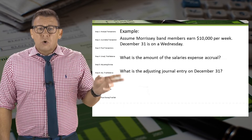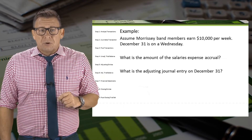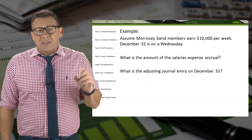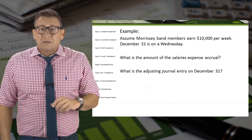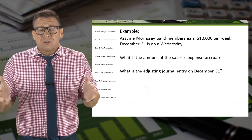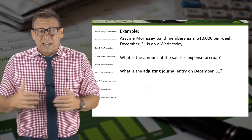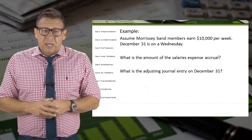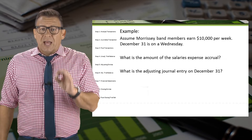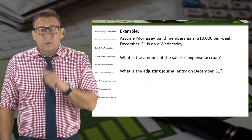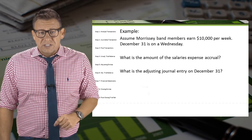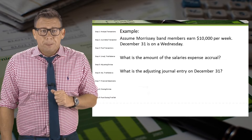Assume Morrissey band members earn $10,000 per week. December 31st is on a Wednesday. Let's figure out how much salary needs to be accrued and then how to record the adjusting entry.